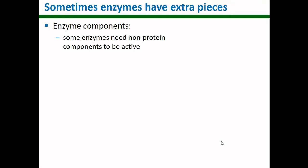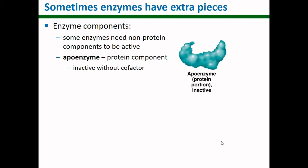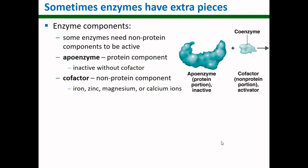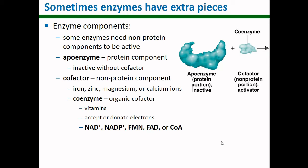It gets a little more complicated than that. Some enzymes need help in order to function. If an enzyme needs an extra piece besides its substrate, it's called an apoenzyme — it's inactive without its extra piece, which is called a cofactor. A cofactor is a non-protein component of an enzyme that it needs in order to be functional, such as zinc, iron, magnesium, or calcium. Cofactors can be coenzymes, which are organic things like vitamins or electron donors or acceptors. All of those things could be cofactors to help an enzyme do its work.